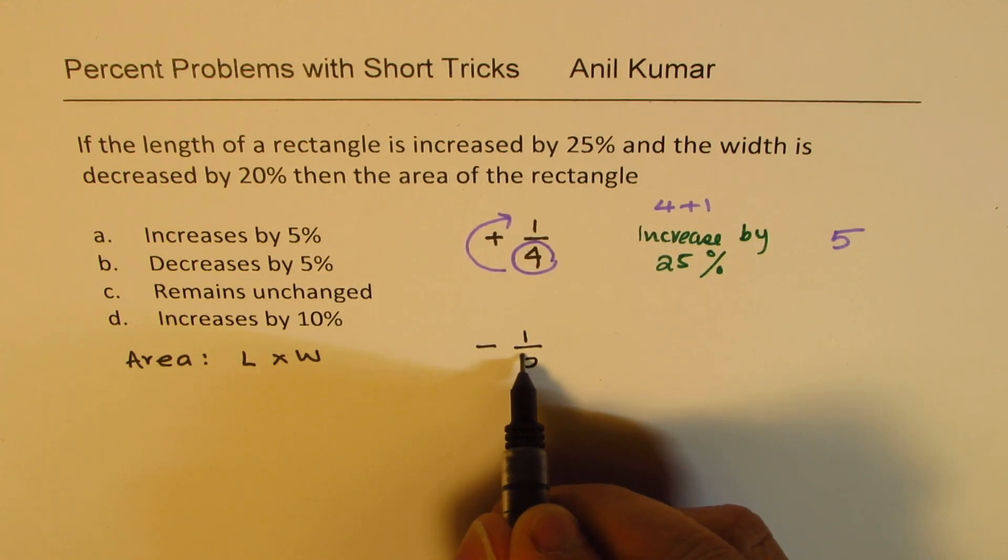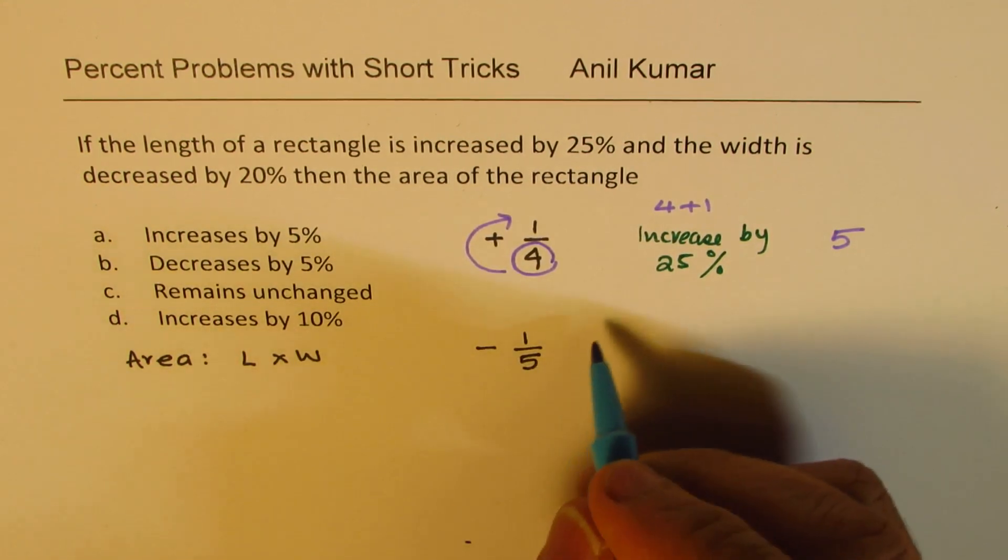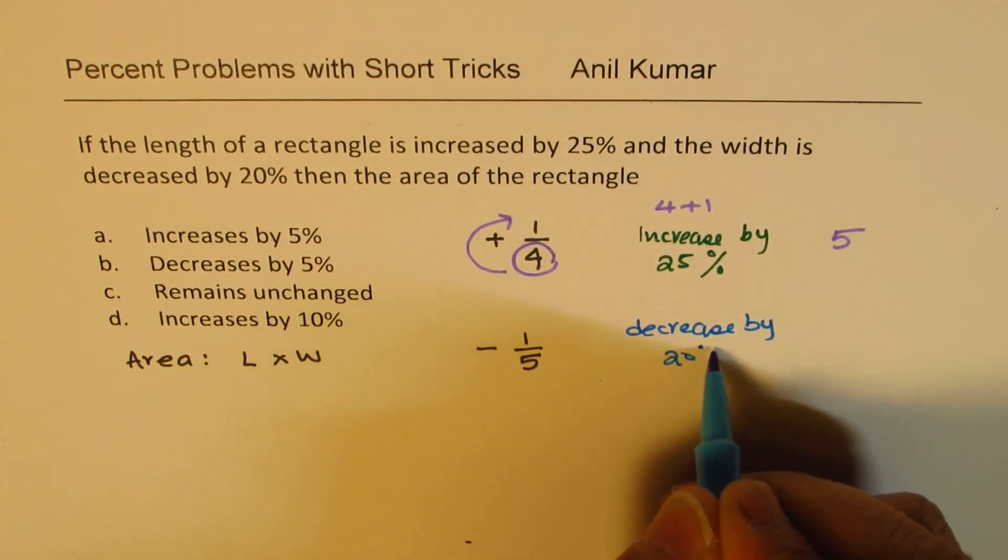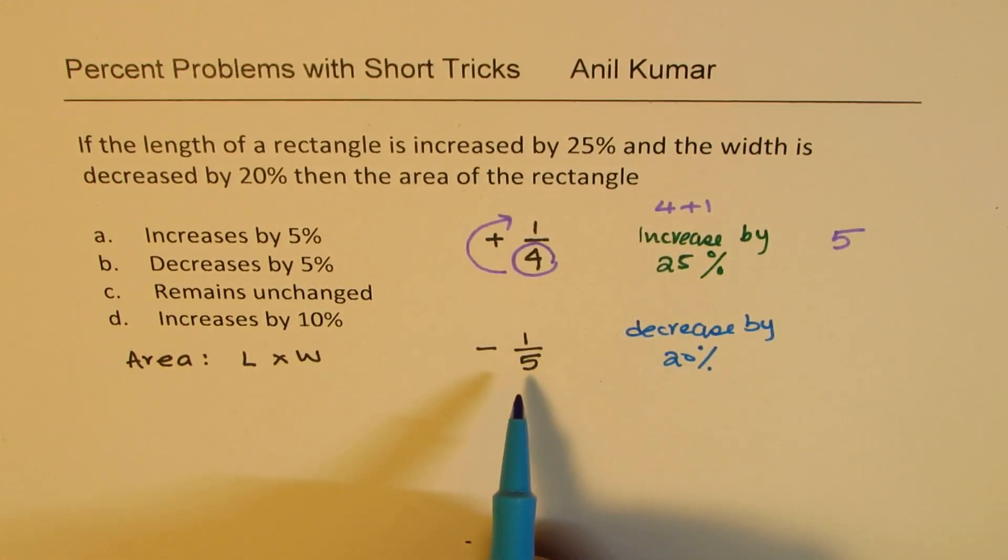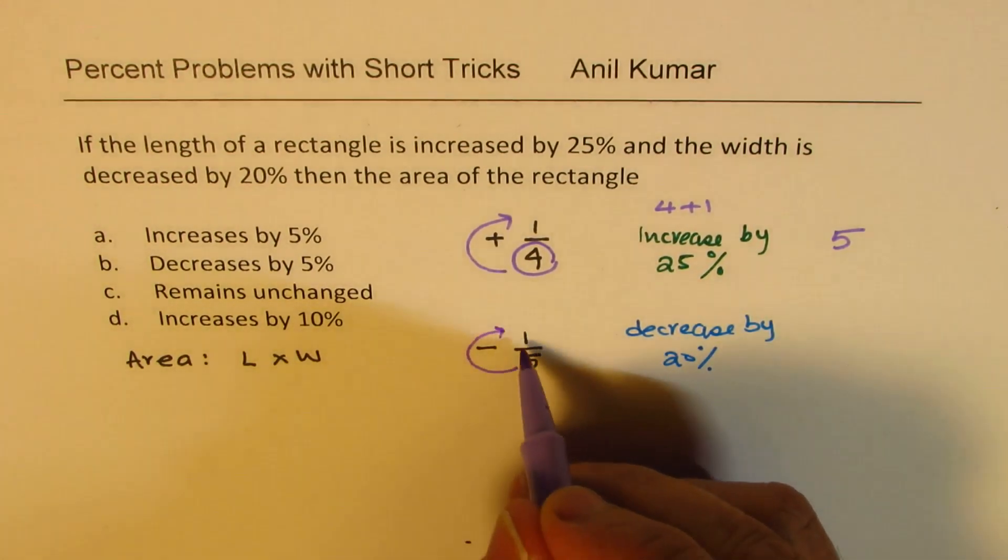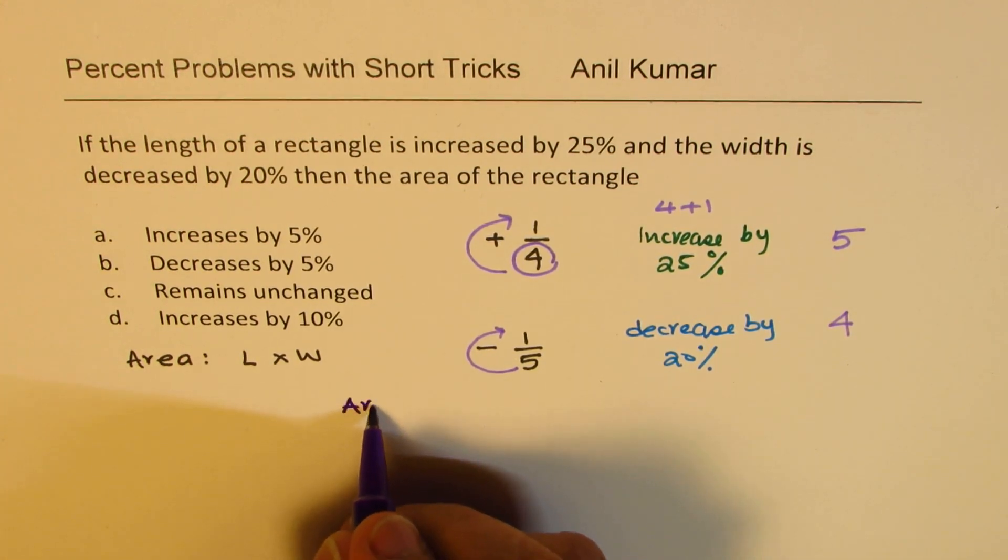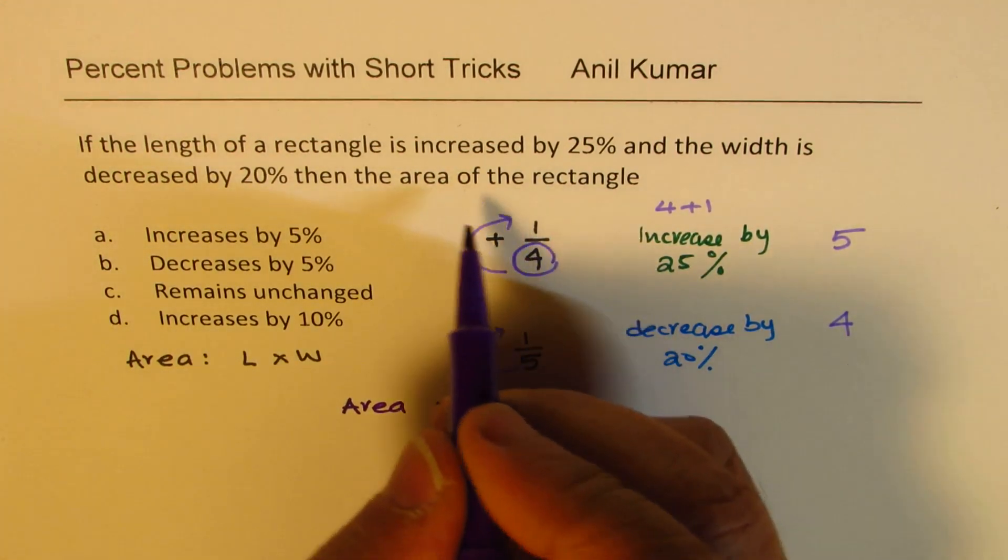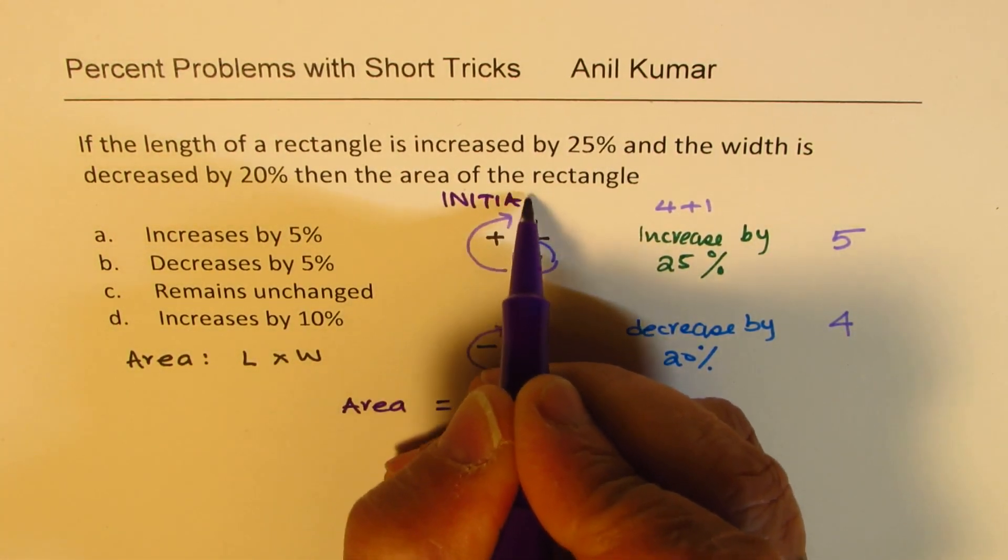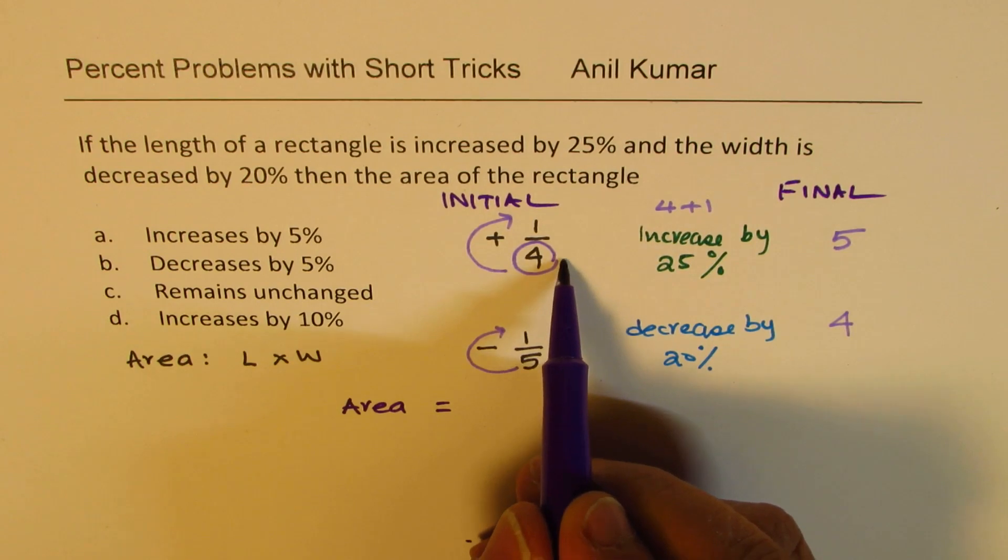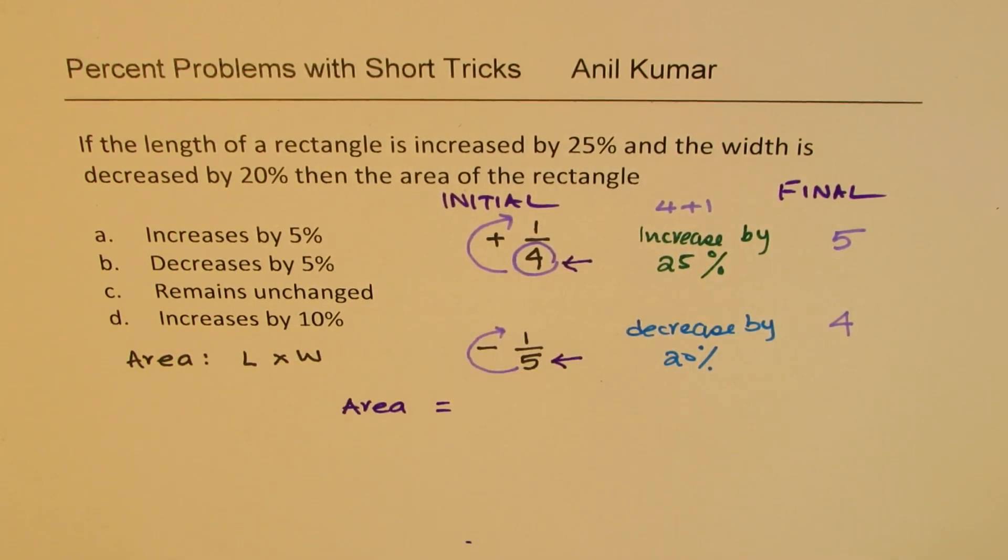When I'm going to decrease the width by 20%, that means negative 20%. Decrease means minus sign. We're decreasing by 20%, which is 1 out of 5. In this case, 5 minus 1 is 4.